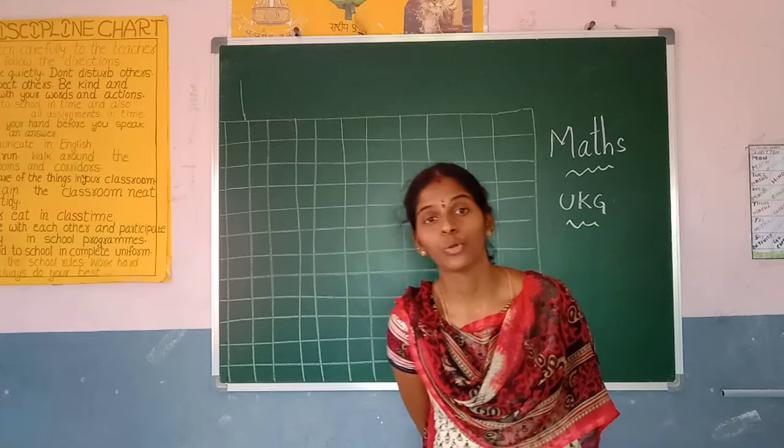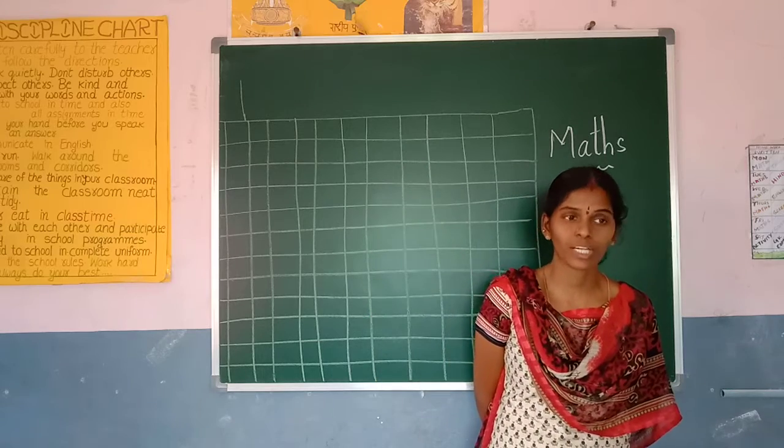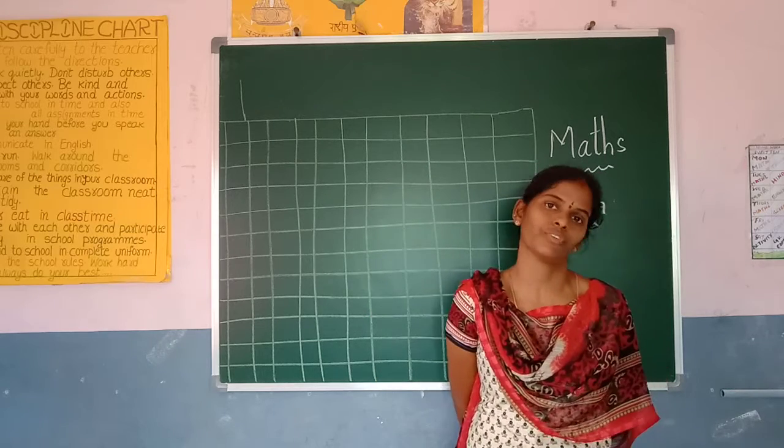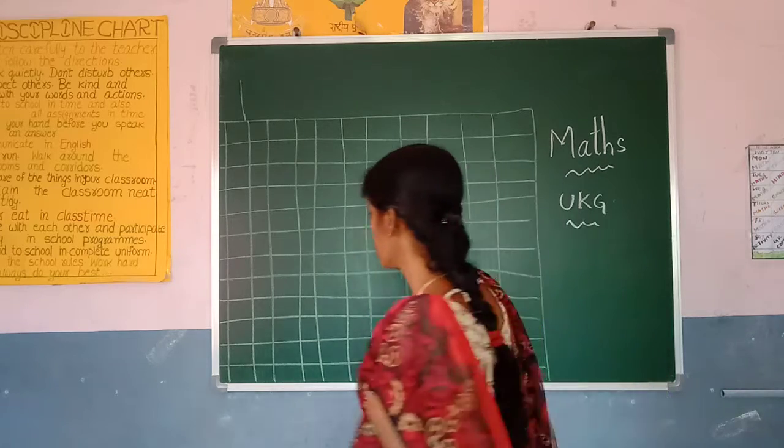So today we are going to write 201 to 250. 2-5-0, 250.